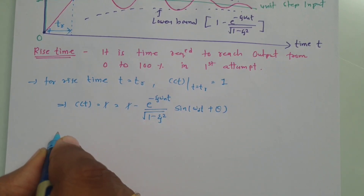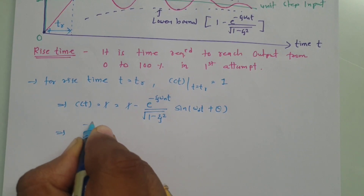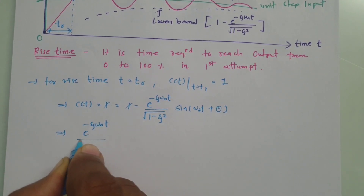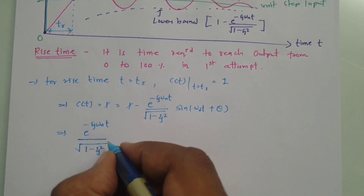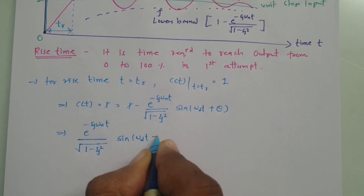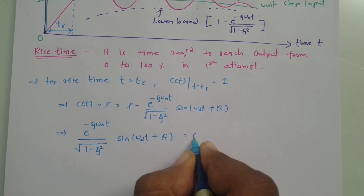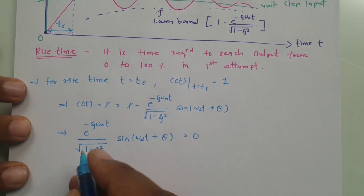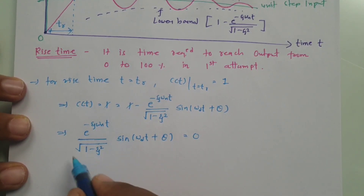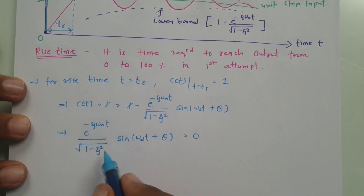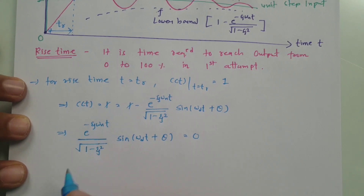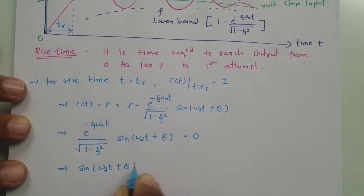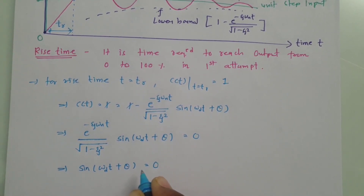Substituting C(t) = 1, the 1s cancel, giving: e^(−ζω_n·t) divided by √(1 − ζ²) times sin(ω_d·t + θ) equals 0. Now, the exponential function e^(−ζω_n·t) cannot be zero when ζ is between 0 and 1. So we conclude that sin(ω_d·t + θ) must equal 0.